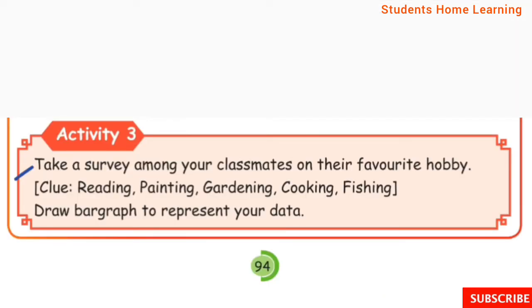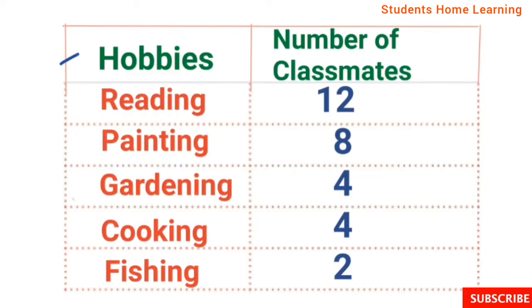Activity 3: Take a survey among your classmates on their favourite hobby — Reading, Painting, Gardening, Cooking, Fishing. Draw a bar graph to represent your data. The data: Reading 12, Painting 8, Gardening 4, Cooking 4, Fishing 2.